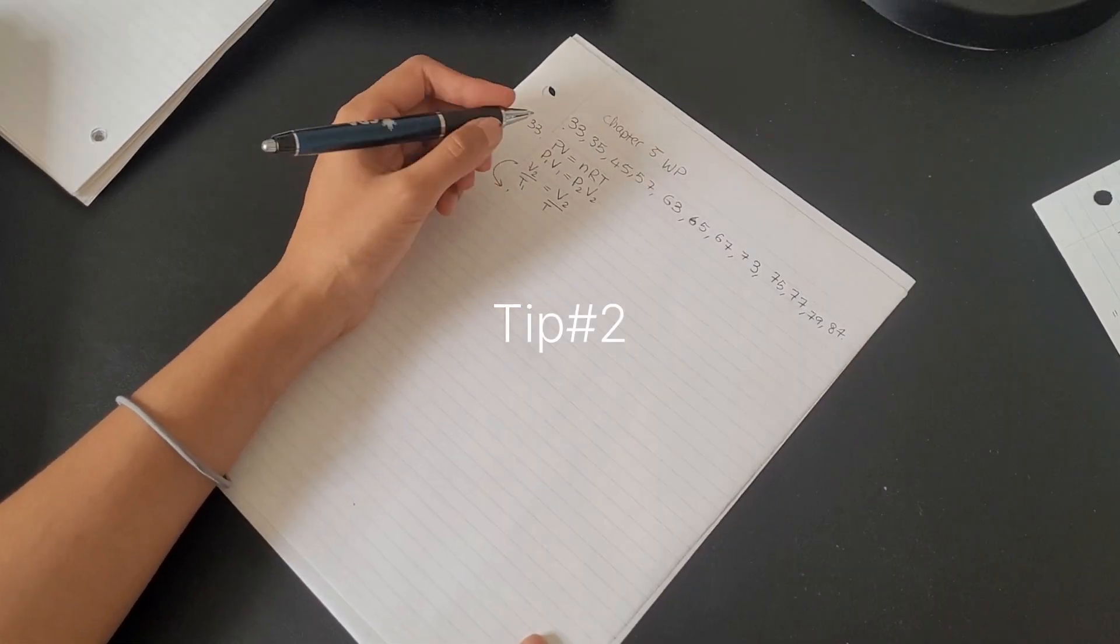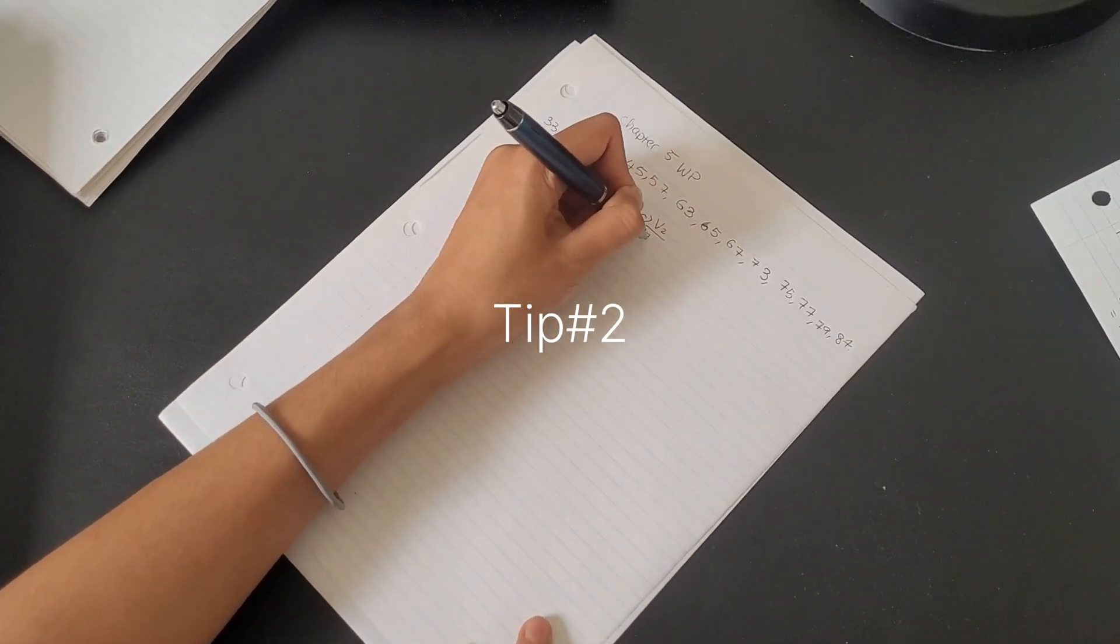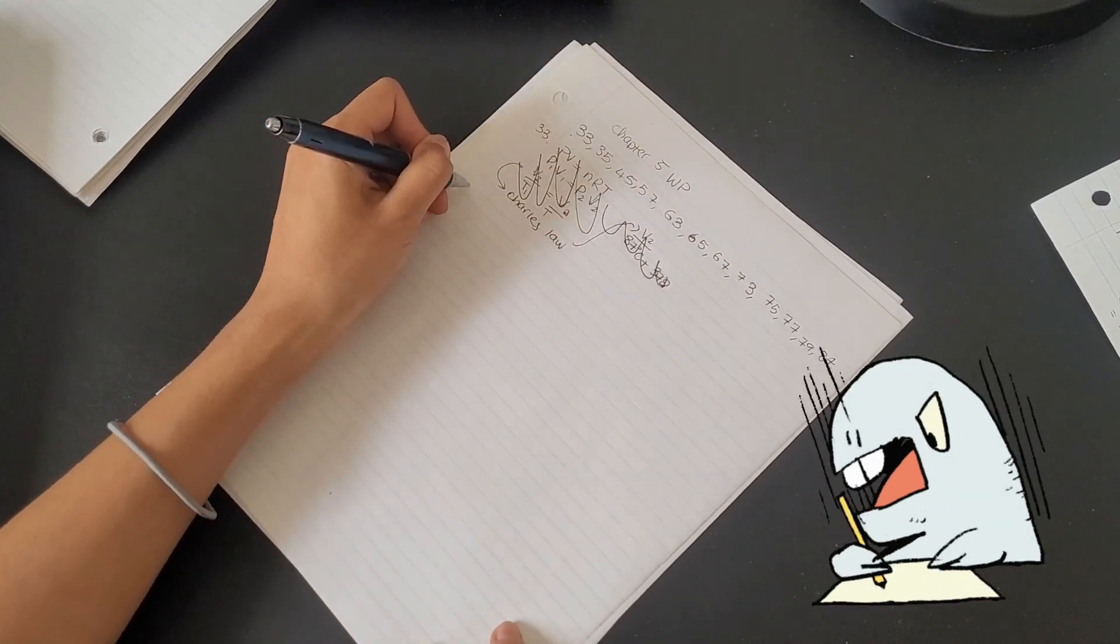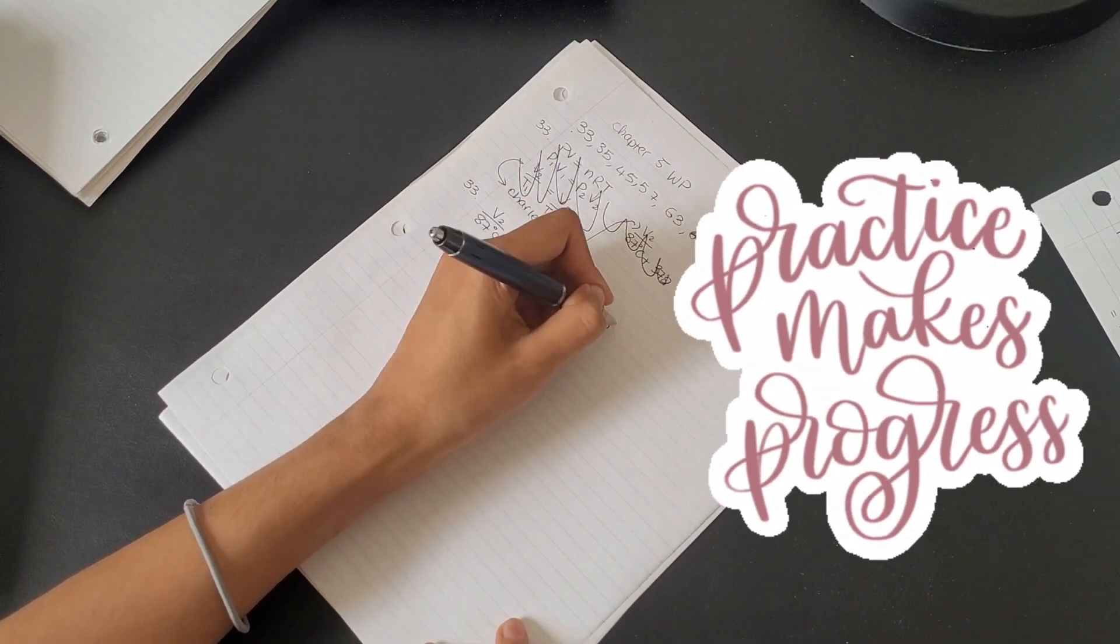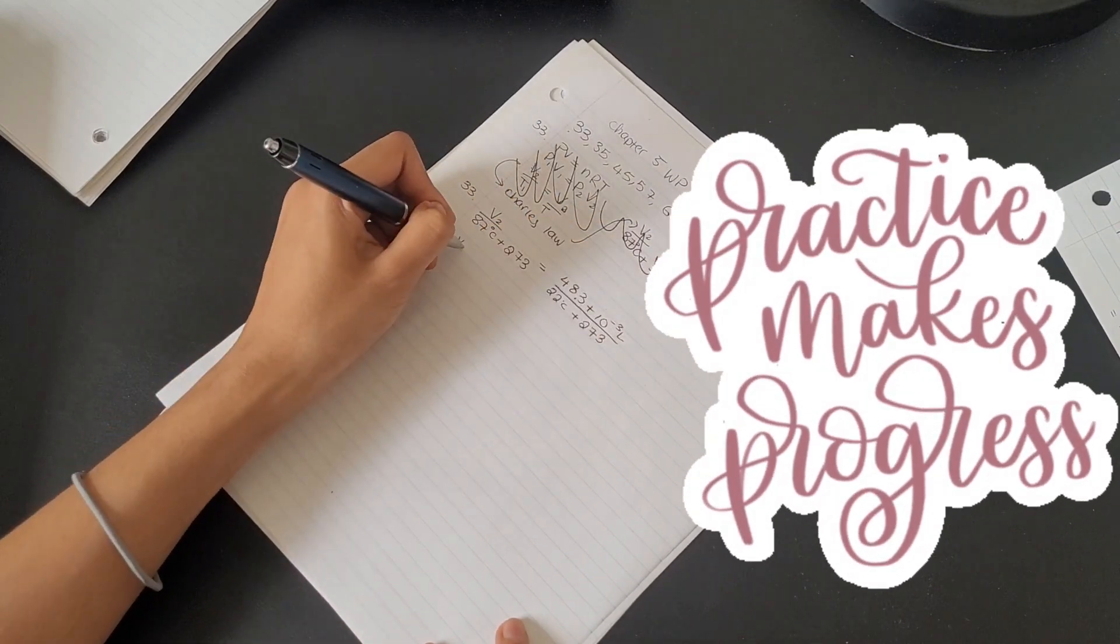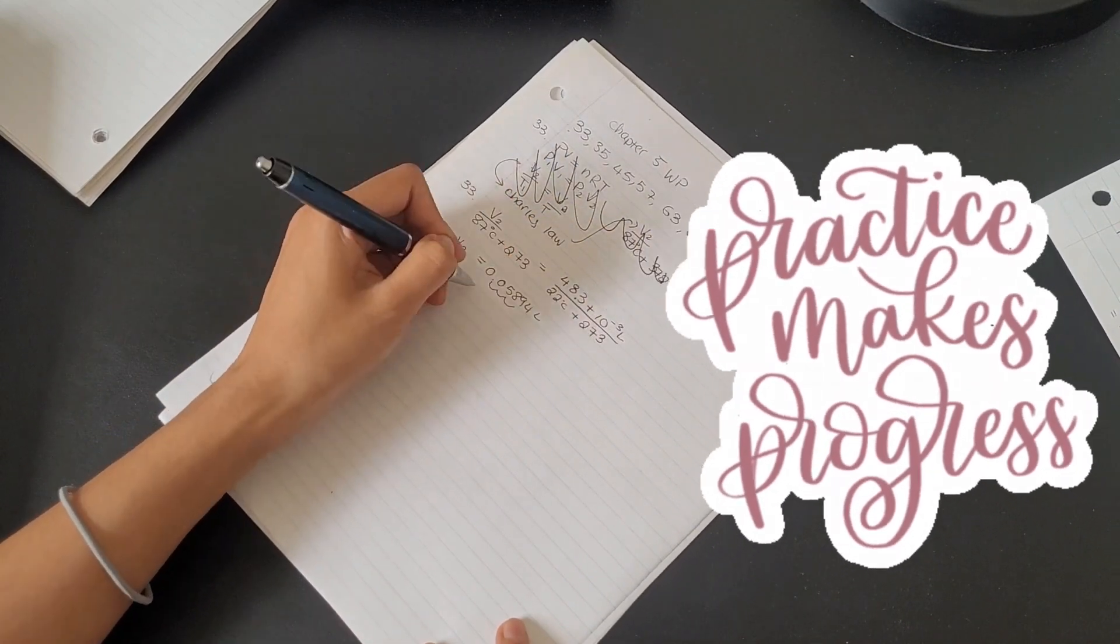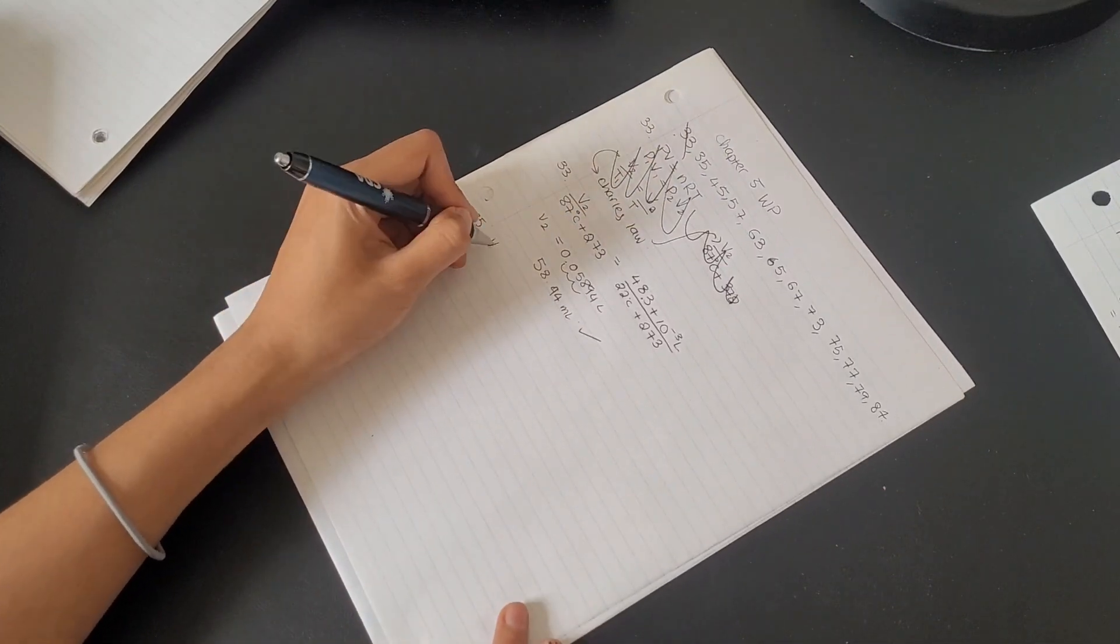Tip number two is do your practice questions over and over again. Specifically focus on questions that you got wrong, figure out why you got them wrong, and do them again and again until it becomes your second nature. Or at least until you're fluent in solving similar questions.